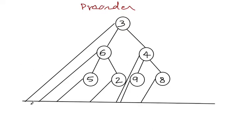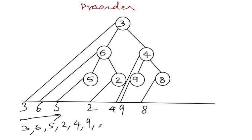Now, this is for node 3 and this is for node 6 and 5, 2, 4, 9, 8. If you go from left to right, then the nodes that we get are 3, 6, 5, 2, 4, 9 and 8. That is it. This is the preorder of a tree.